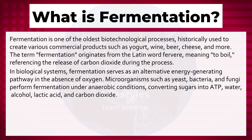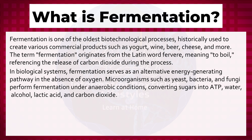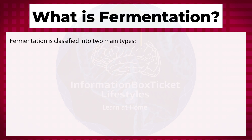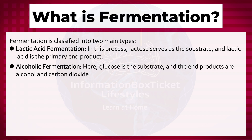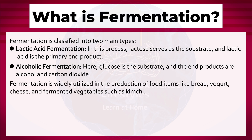Microorganisms such as yeast, bacteria, and fungi perform fermentation under anaerobic conditions, converting sugars into ATP, water, alcohol, lactic acid, and carbon dioxide. Fermentation is classified into two main types: lactic acid fermentation, where lactose serves as the substrate and lactic acid is the primary end product; and alcoholic fermentation, where glucose is the substrate and the end products are alcohol and carbon dioxide. Fermentation is widely utilized in the production of food items like bread, yogurt, cheese, and fermented vegetables such as kimchi.